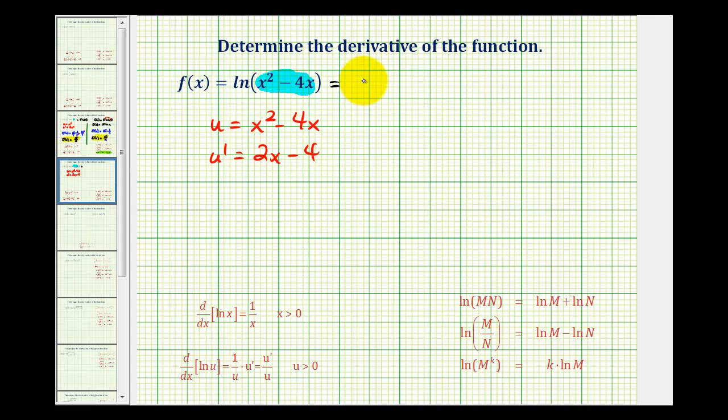So now we can write this function as just natural log u. So f prime of x is equal to the derivative of natural log u, which is just 1 over u times u prime, or 1 over x squared minus 4x times u prime, which is 2x minus 4.